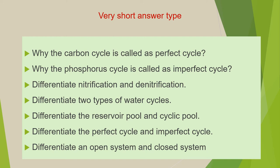Next: differentiate the reservoir pool and cyclic pool. Next: differentiate the perfect cycle and imperfect cycle. The last question of this category is: differentiate an open system and a closed system. As these are very short answer type questions, you have to answer in two to three lines, writing definitions wherever asked. This will cover the first compulsory question of your paper.